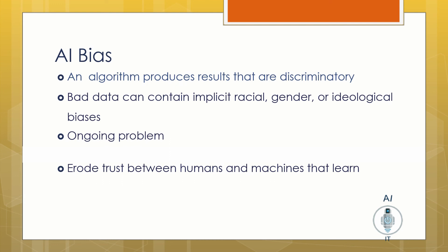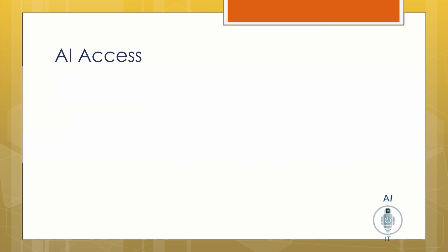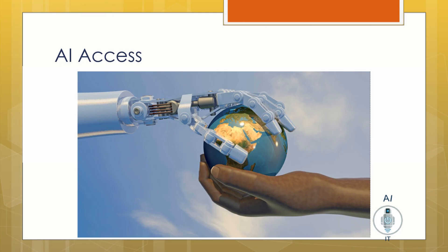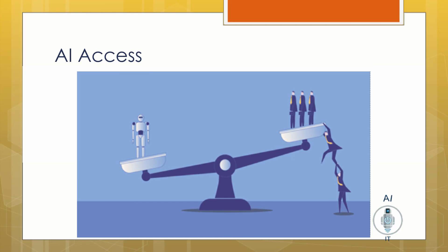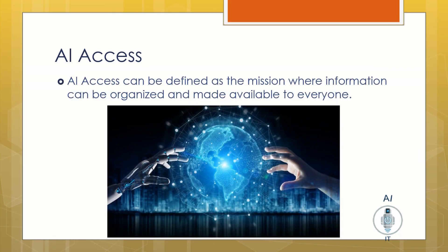We need to be very careful when we feed data sets for our AI model. Since artificial intelligence is still a budding technology, not everyone has access to it. People who can afford AI-enabled devices make the most of it, while those who don't are left behind, creating a gap between two classes of people that keeps widening with advancements. AI access can be defined as the mission where information is organized and made available to everyone.